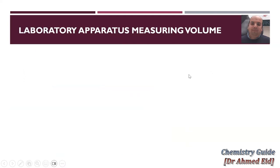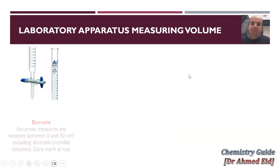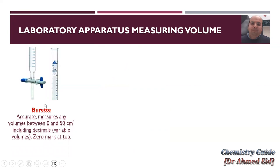When measuring volume, we can use a burette. The burette is accurate and can measure any volume between 0 and 50 cubic centimeters, so it is used for variable volumes. You can measure, for example, 26.5, 48, 37, or 37.4. It is used to measure variable volumes and can also be used for measuring decimals, such as 23.6 or 0.7.